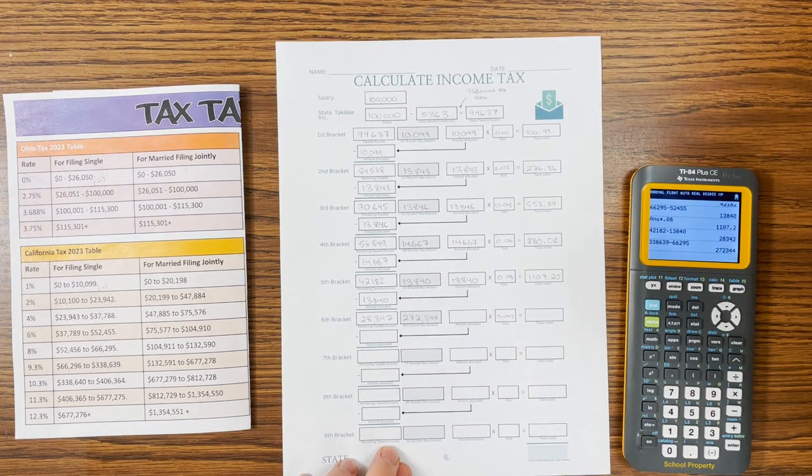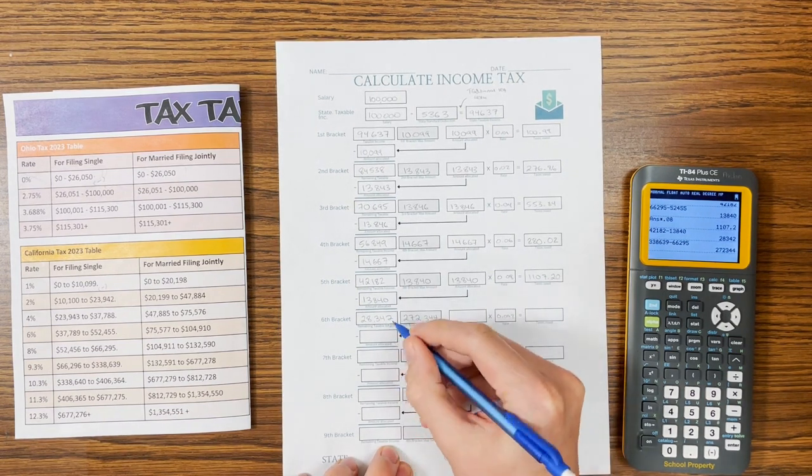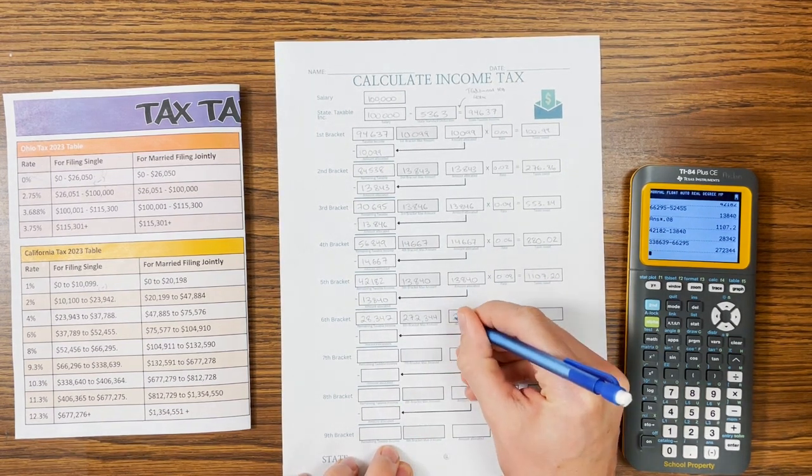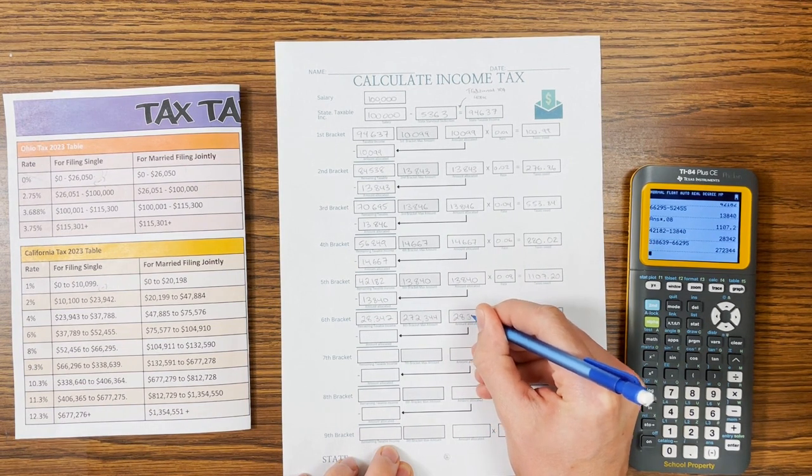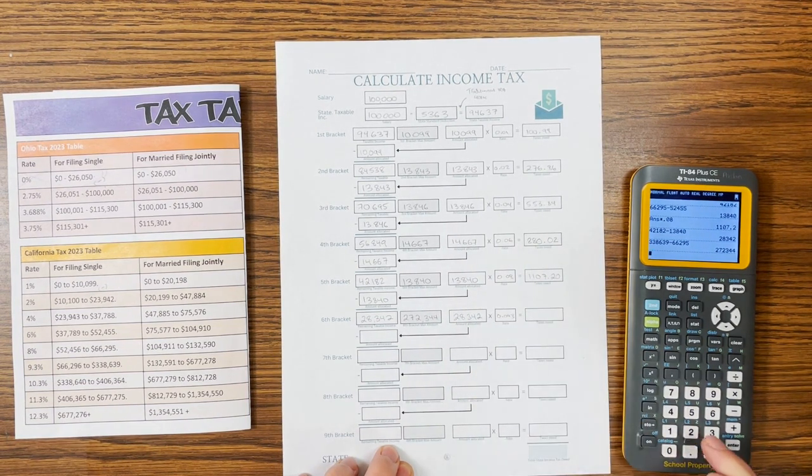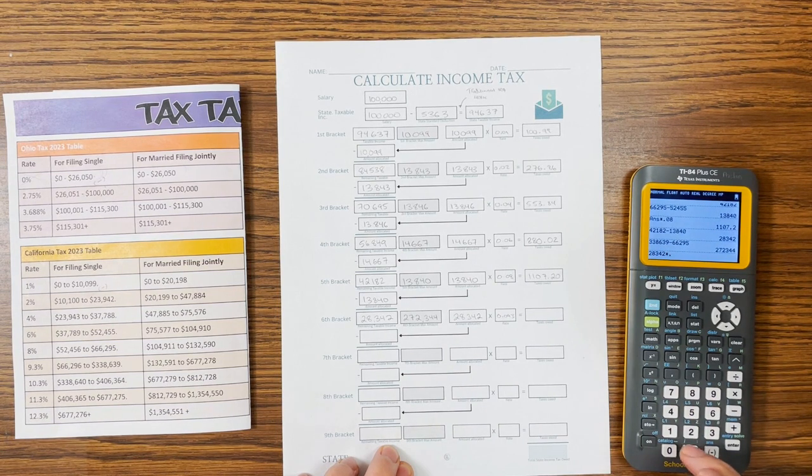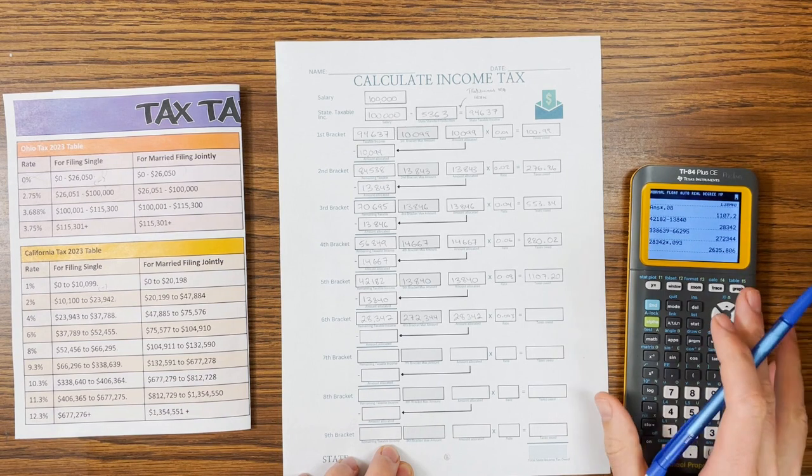All right, so we have less than the bracket can hold. So we're going to put the full amount in, $28,342. So $28,342 times .093, $265,